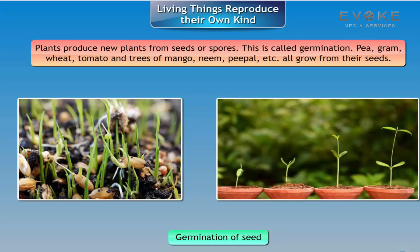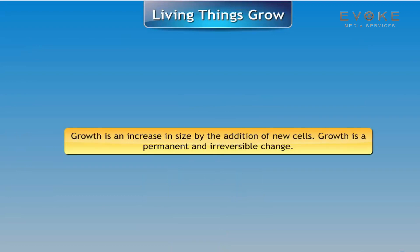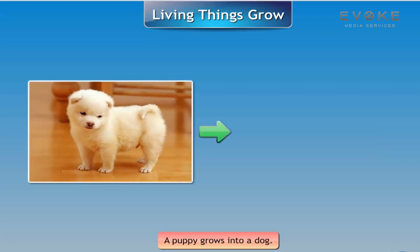Pea, gram, wheat, tomato, and trees of mango, neem, peepal, etc., all grow from their seeds. Living things grow. Growth is an increase in size by the addition of new cells. Growth is a permanent and irreversible change.